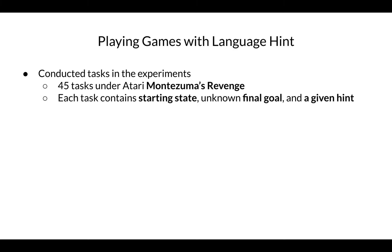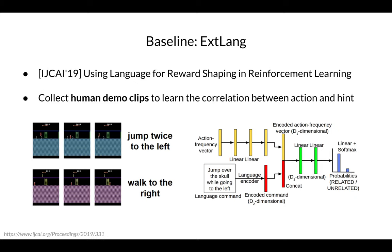To evaluate playing games with language hints, we conduct the following tasks in the environment. In the experiments, we have 45 different tasks under the Atari Montezuma's Revenge environment. Each task contains a starting state, an unknown final goal, and a given hint. The agent has to explore the environment and finally achieve the goal position with the help of the given hint. The baseline EXT Language is from IJCAI 2019, using language for reward shaping in reinforcement learning.